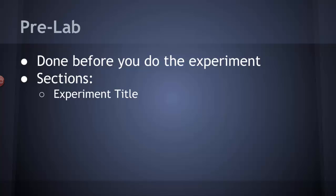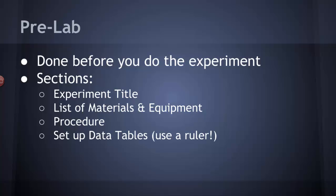The pre-lab has certain sections that have to be in there. First, you want an experiment title so you know what it is you're looking at. You want to list out the materials and equipment you're going to use in this experiment. You're going to list the steps you're going to do in this lab - it's called a procedure.